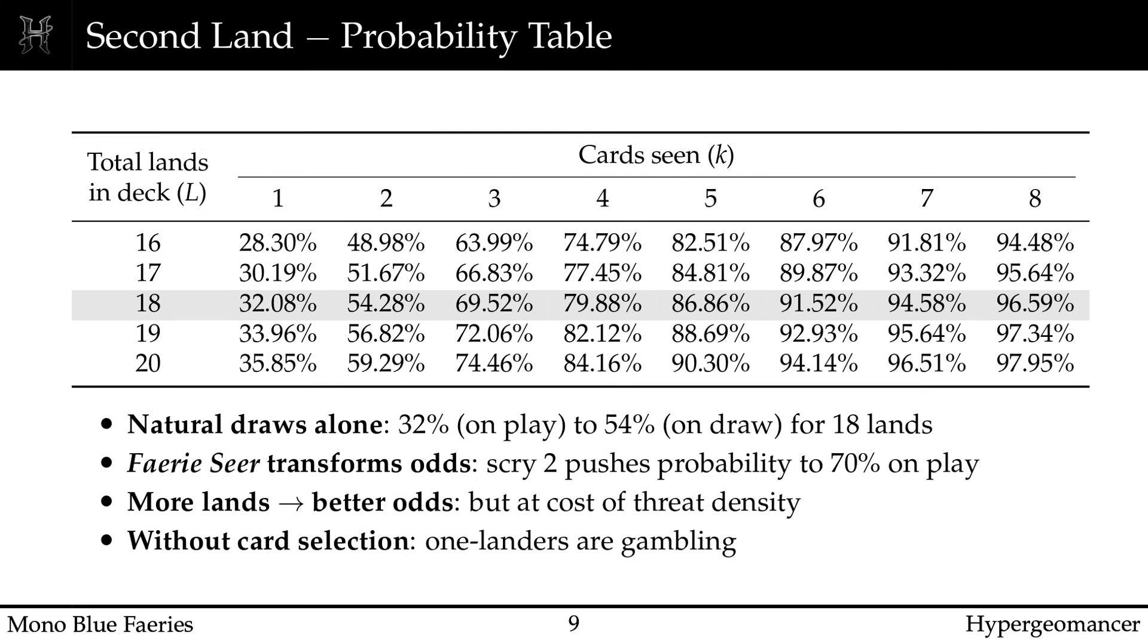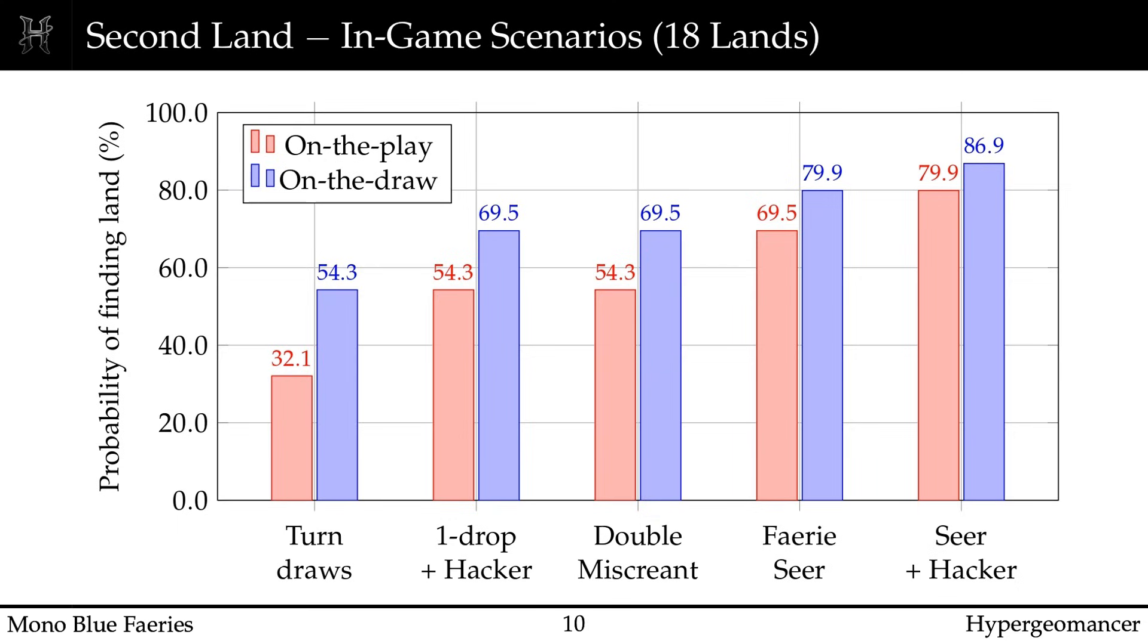Now here is where Faerie Seer changes everything. That scry 2 means that you effectively see 3-4 cards by turn 2. With Faerie Seer, your probability jumps to nearly 70% on the play and around 80% on the draw. This is why Faerie Seer isn't just good, it's structural to the deck. The practical takeaway is very sharp. 1 land hands are keepable if they contain Faerie Seer.